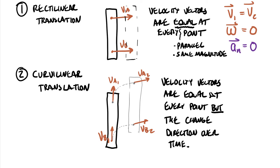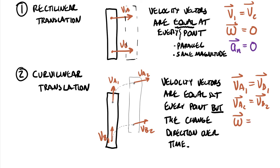At any instant, the velocity vectors are going to be parallel on that body — not only parallel but also having equal magnitude. So we can say VA1 as a vector equals VB1, and VA2 as a vector equals VB2. As for omega, the angular position is not changing, so omega is still zero. However, the normal acceleration AN is non-zero because we have a curved path in this case.